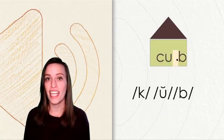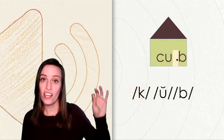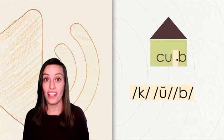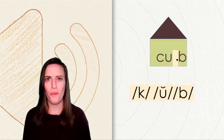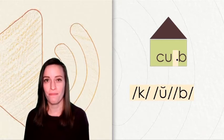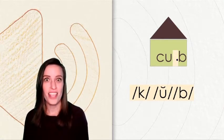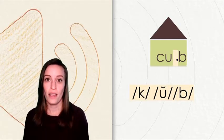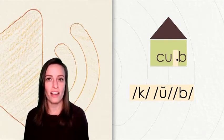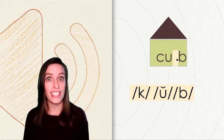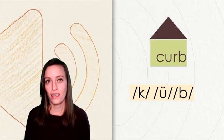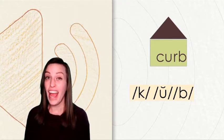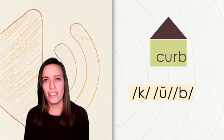Listen for the vowel sound in this word. When I blend those together, the sounds make the word cub. What vowel sound did you hear? This word has the vowel sound uh, the short vowel U. But wait, the vowel sound has a visitor. Let's open the door and see who has come to visit.